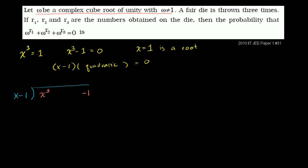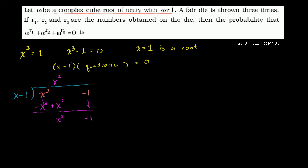x minus 1 goes into x cubed minus 1. Looking at the highest degree terms: x goes into x cubed, x squared times. x squared times x is x cubed. x squared times negative 1 is minus x squared. We subtract, so these cancel out and we get x squared minus 1. Then x goes into x squared, x times, giving plus x. x times x is x squared, x times negative 1 is negative x. These cancel out and we get x.